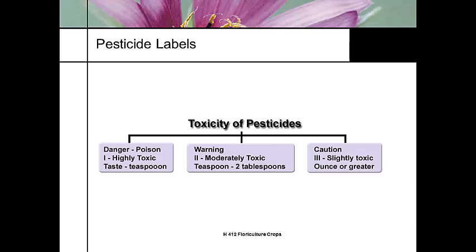If the toxicity is listed as caution, that means you could probably, in theory, consume an ounce or more of the concentrated product without any risk. Warning — moderately toxic — you're at risk if you were to consume a teaspoon to two tablespoons. Danger is highly toxic. We actually have a lot of danger chemicals in our own homes — bleach, lye for cleaning the stove. These toxicity statements are not just for pesticides, but for all the chemistry we have in our lives.